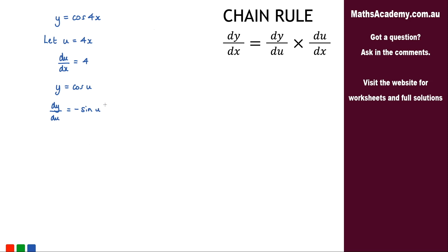Now we can go ahead and quote that chain rule. dy by dx is equal to dy by du multiplied by du by dx. Now let's pop in dy by du, which is negative sine of u, and we're going to multiply that by du by dx, and du by dx we know is 4.